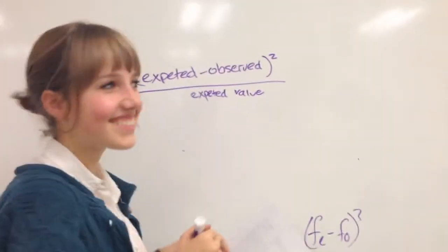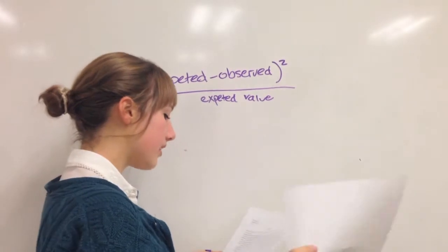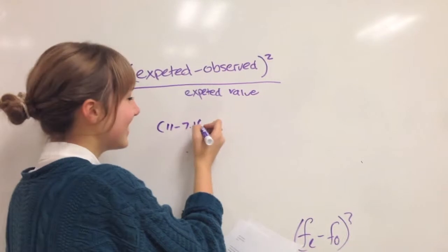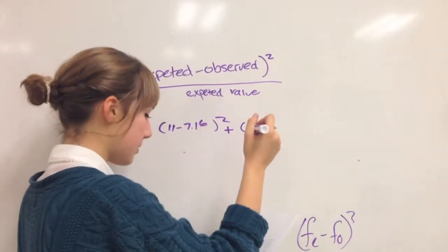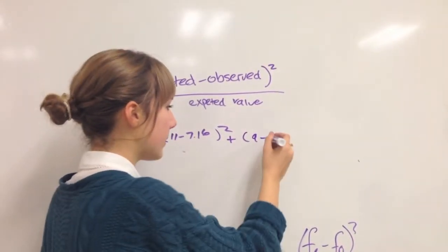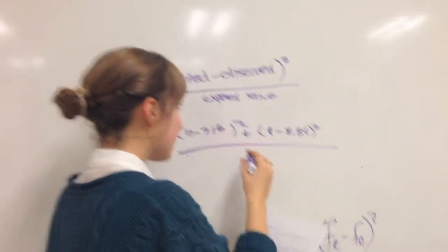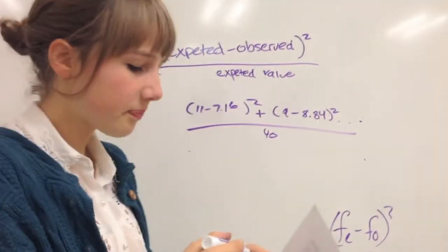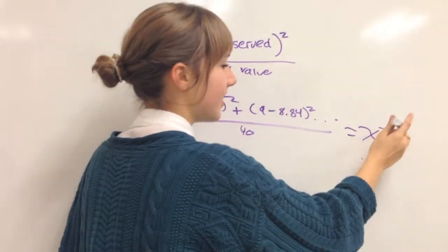You subtract it divided by the subtracted value again. So what that's going to look like with my values is 11 minus 7.16 squared. And then you add the next one to that, which is 9 minus 8.84 squared. And then you divide that by 40. So you do that with all of your values, and then that equals chi-square.